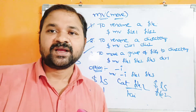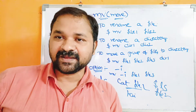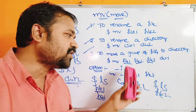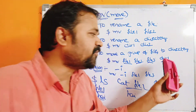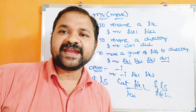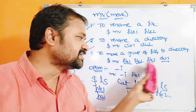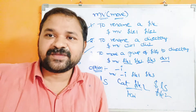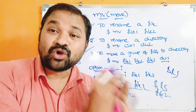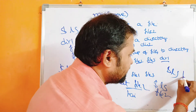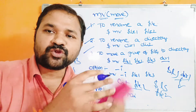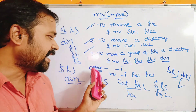Another advantage of the move command is it is useful to move a group of files into a directory. Before executing this command, we first need to create the directory using mkdir directory1. When we execute mv file1 file2 file3 directory1, the files will be cut from their location and pasted into directory1. Running ls will show only directory1, which contains file1, file2, and file3.